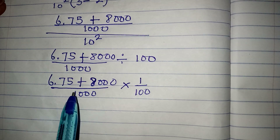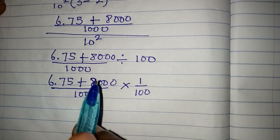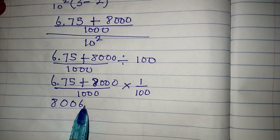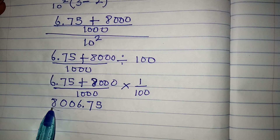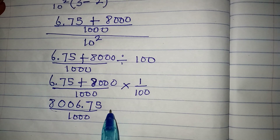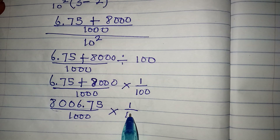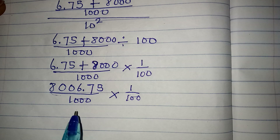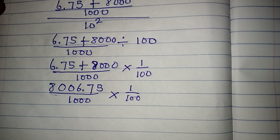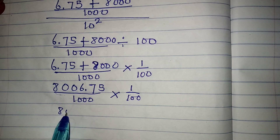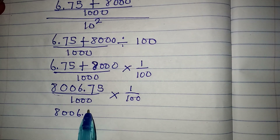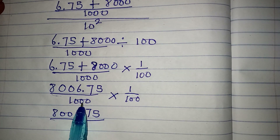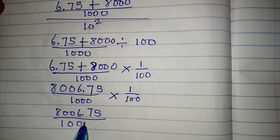Now let's add the numerator: 8000 plus 6.75, still over 1000, then multiplied by 1 over 100. Multiplying the denominators: 1000 times 100 gives 100,000. So we have 8006.75 over 100,000.